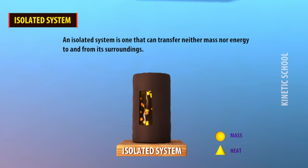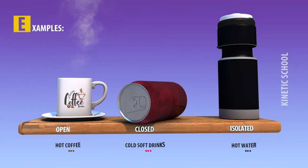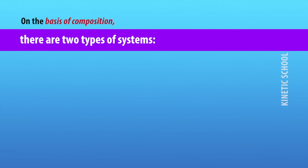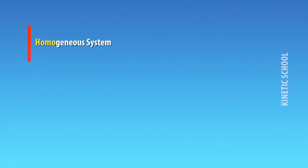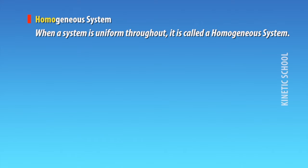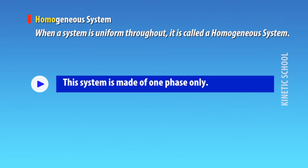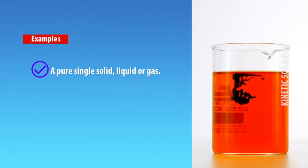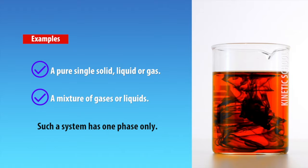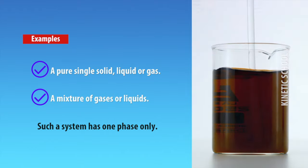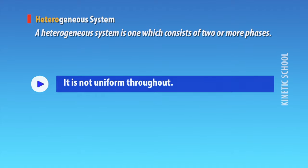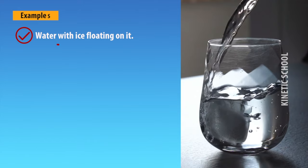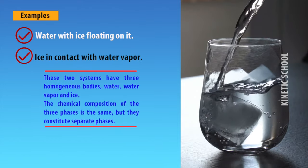On the basis of composition there are two types of systems: homogeneous systems and heterogeneous systems. A homogeneous system is uniform throughout and is made of one phase only. Examples include a pure single solid, liquid, or gas, or a mixture of gases or liquids. A heterogeneous system is one which consists of two or more phases and is not uniform throughout.